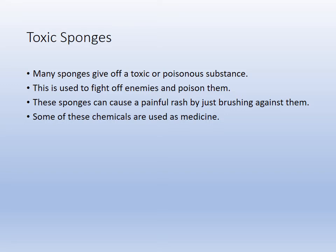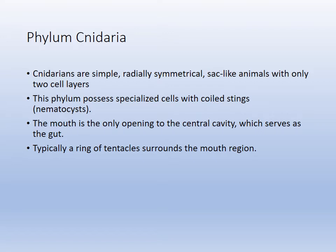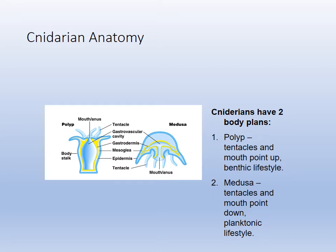The next phylum, Cnidaria, is characterized by cnidocytes or stinging cells. They're radially symmetric, sac-like, and have two cell layers. They have a body opening but don't have a coelom or mesoderm. They have nematocysts and a ring of tentacles. We've talked about the two body forms: the polyp, generally benthic with mouth and tentacles up, and the medusa, generally planktonic with mouth and tentacles down.